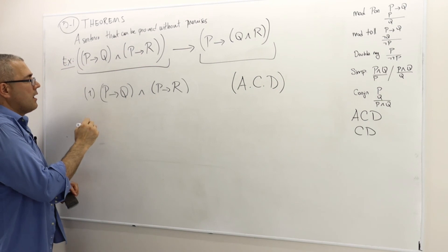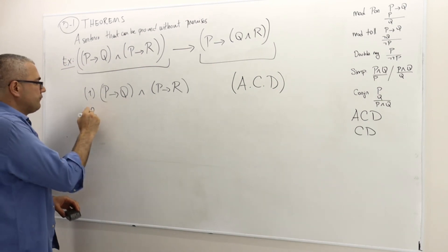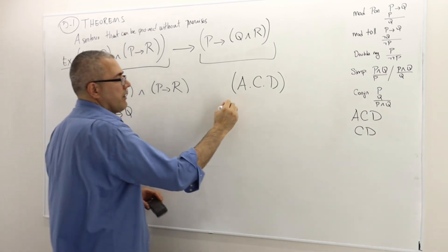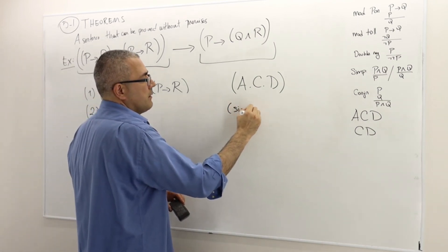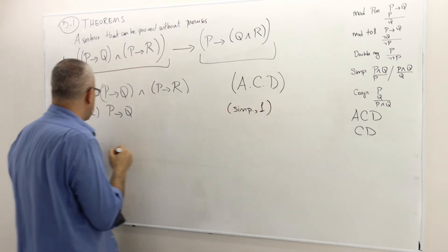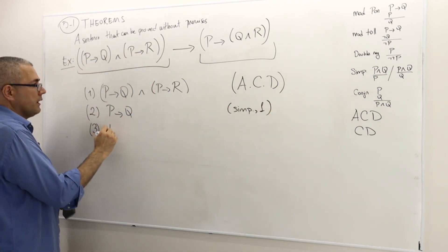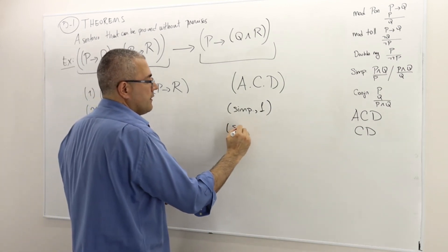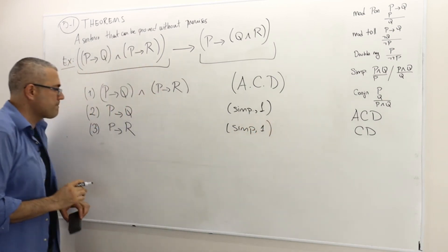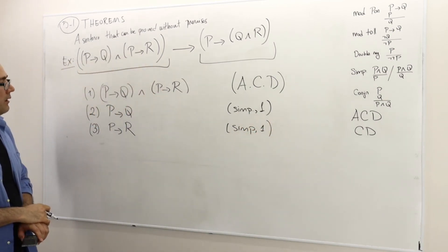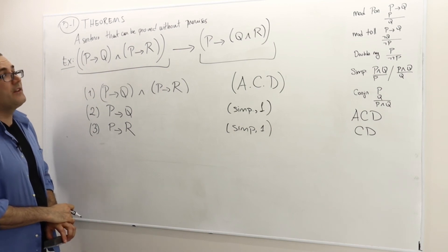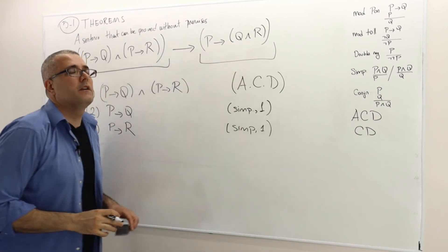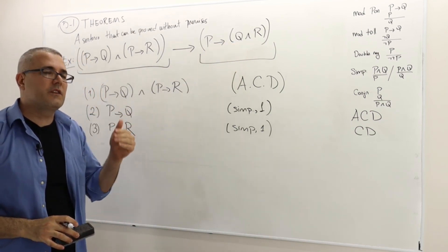What can I deduce from this? By simplification, P implies Q must be correct — this is simplification of the argument in line 1. Similarly, P implies R must be true — again, simplification of the argument in line 1. What else do I have? That's basically it; I'm kind of stuck. But remember, I want to prove P implies Q and R, which is another conditional statement.